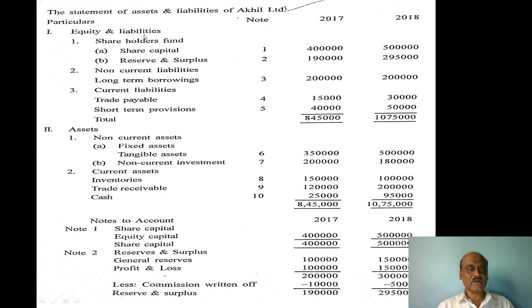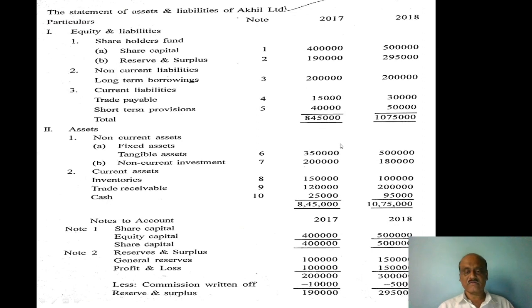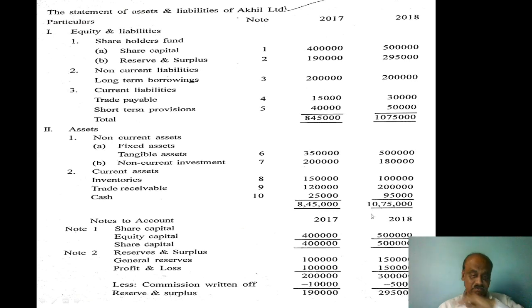The particulars for years 17 and 18: equity and liabilities - shareholders fund, share capital (Note 1) is 4 lakh and 5 lakh rupees. Reserve and surplus is 1 lakh 90,000 and 2 lakh 95,000. Long-term borrowings 2 lakh and 2 lakh. Trade payables 15,000 and 30,000. Short-term provisions 40,000 and 50,000. Total assets and liabilities: 8,45,000 and 10,75,000. Fixed assets tangible 3,50,000 and 5 lakh. Non-current investment 2 lakh and 1 lakh 80,000. Inventory 1 lakh 50,000 and 1 lakh. Trade receivable 1 lakh 20,000 and 2 lakh. Cash 25,000 and 95,000. Total 8,45,000 and 10,75,000.